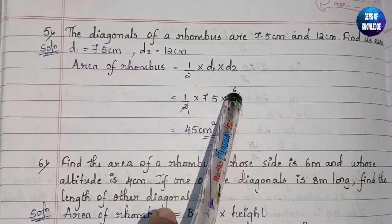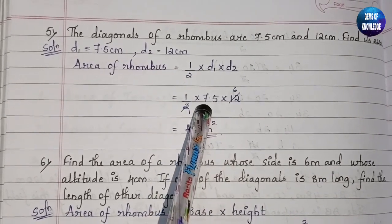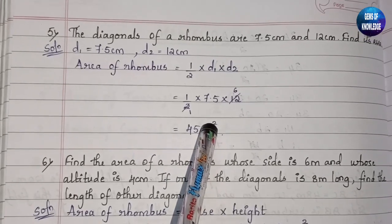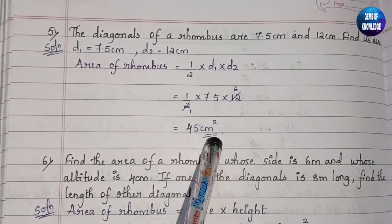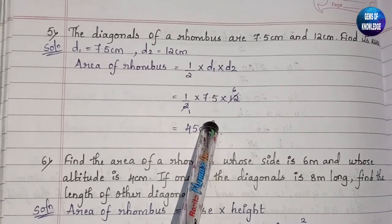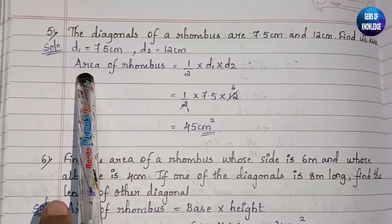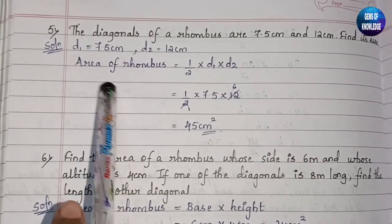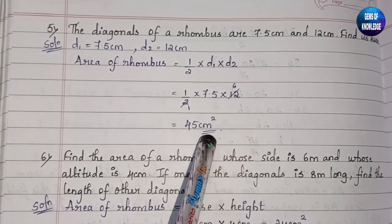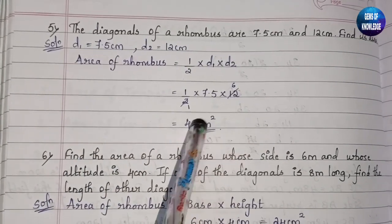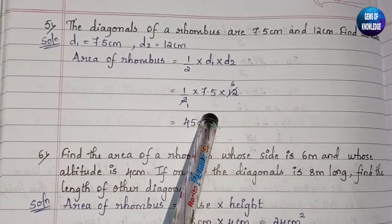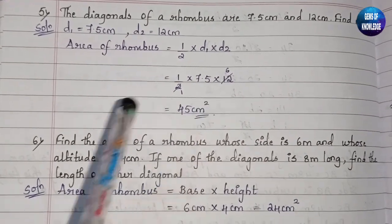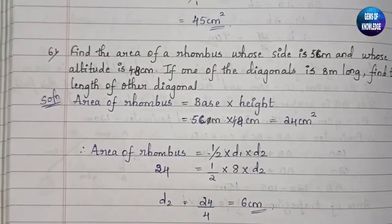We can cancel: 2 and 12 gives 6, so 6 into 7.5 equals 45 centimeter square. We take square units here because area is always expressed in square centimeters — or square meters if the unit is meters. Area is always in square units.